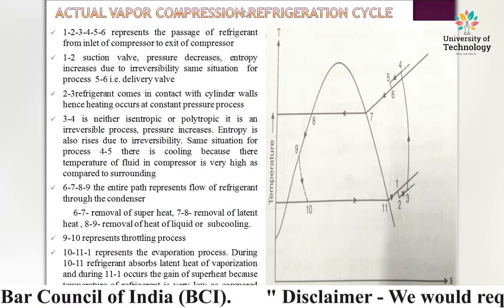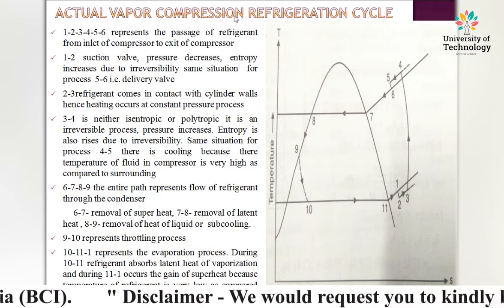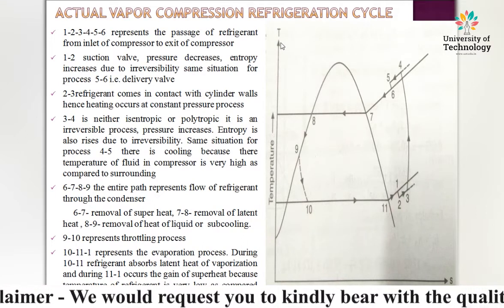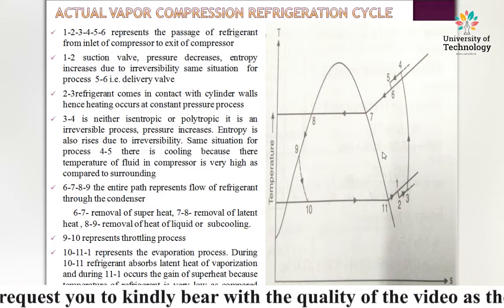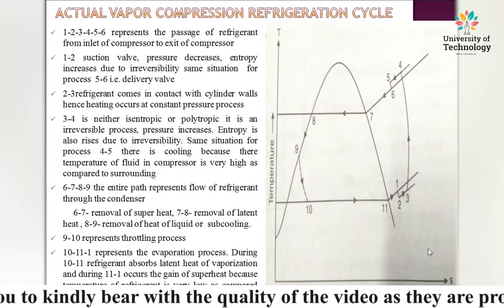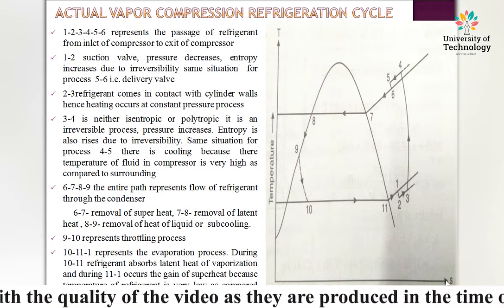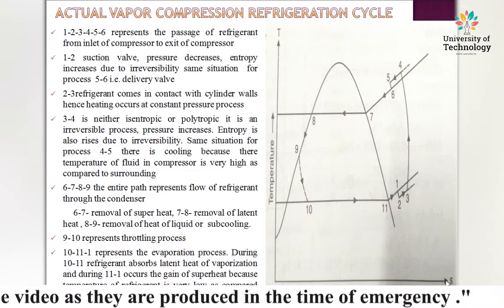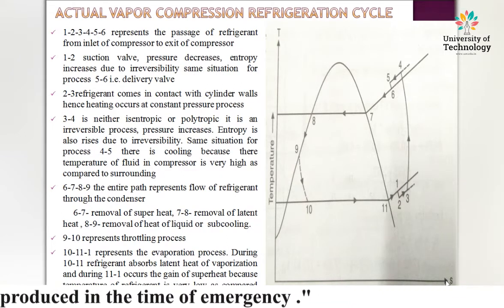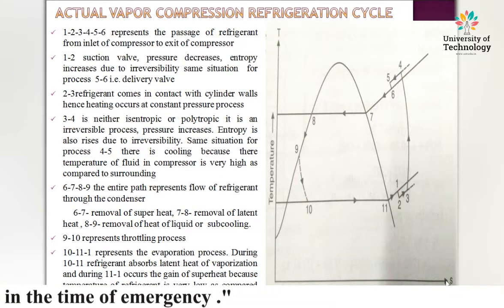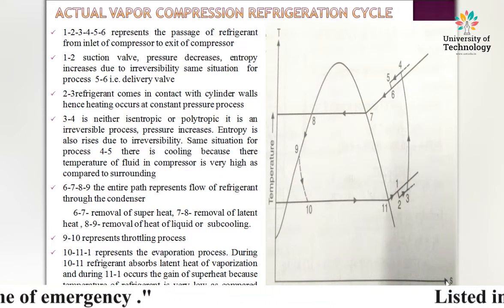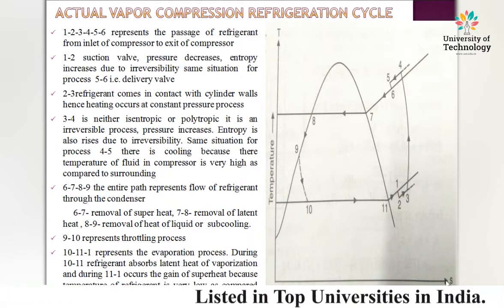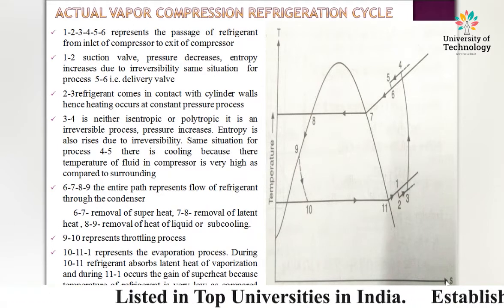This is the T-S diagram — the temperature versus specific entropy diagram for an actual vapor compression refrigeration cycle.